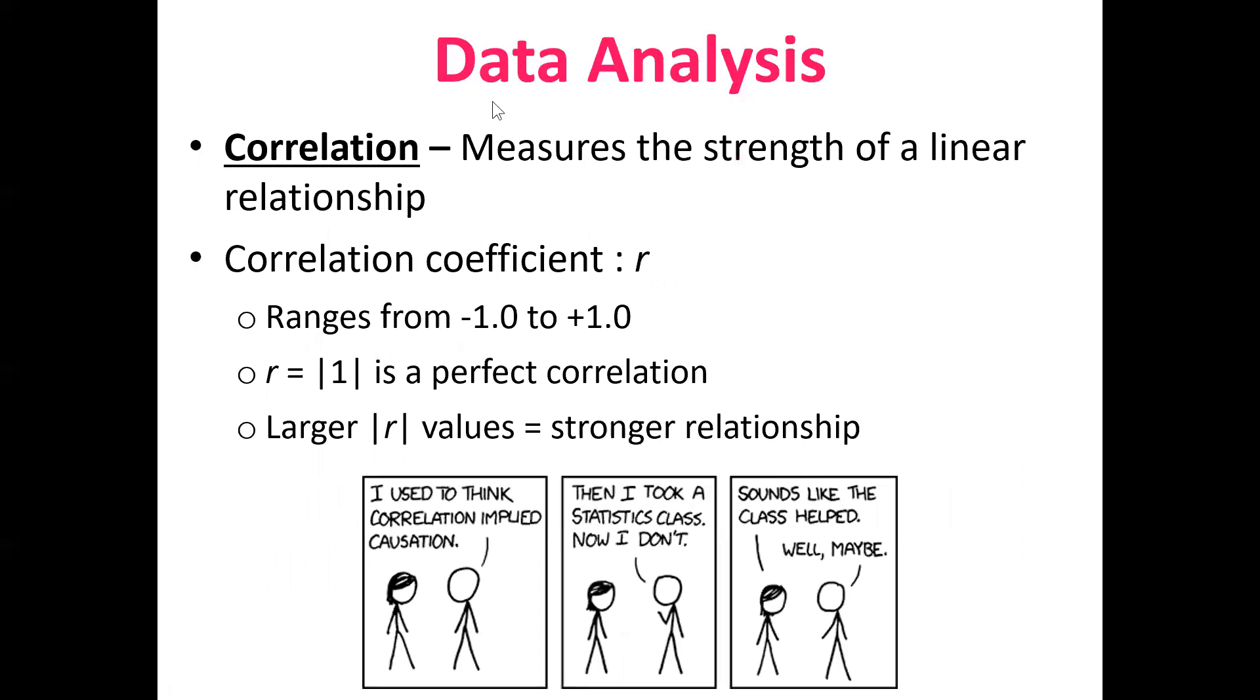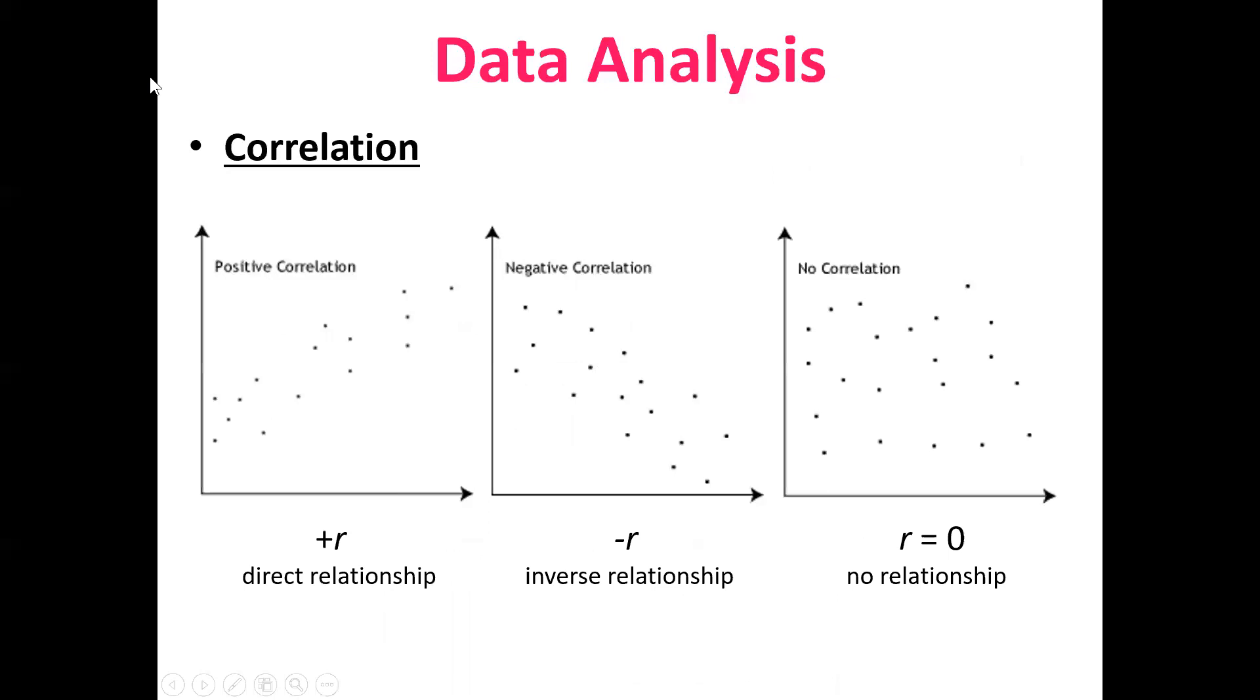Correlations, like I mentioned, these measure the strength of a linear relationship, of a relationship that can be described with a straight line. And the correlation coefficient, r, it ranges from a value of negative one to a value of positive one. A value at either of those extremes represents a perfect correlation. And a value in the middle say zero is perfectly anti correlated. Generally, the larger the correlation coefficient value is, then the stronger the relationship. These are just three examples of correlations. So on the left here, we have a positive correlation. In the middle, we have a negative correlation. And on the right, we have no correlation between the X and the Y values.